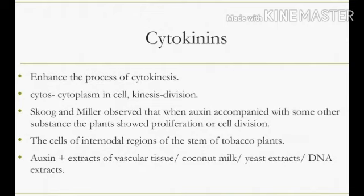The two scientists named Coog and Miller observed that when auxin was accompanied with some other substances, the plant showed proliferation or cell division. The other substances include extracts of vascular tissues, coconut milk, yeast extracts, or DNA extracts. When auxin is accompanied with these substances, it shows proliferation or cell division. The scientists observed this in the inter-nodal region of the stem of tobacco plants.